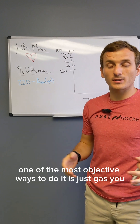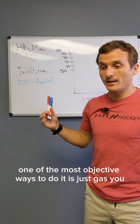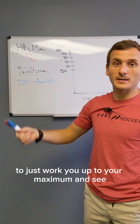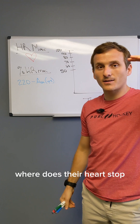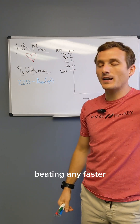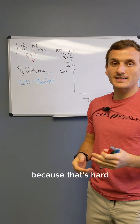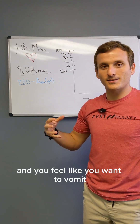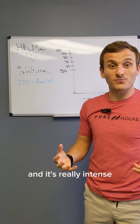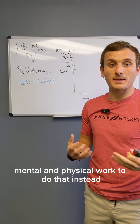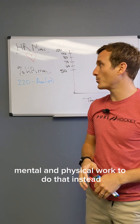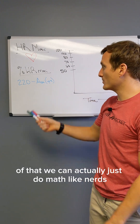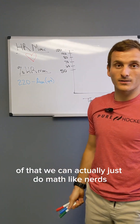There are objective ways to find your heart rate max — the most objective is to just gas yourself, work up to your maximum, and see where your heart stops beating any faster. But that's hard, it feels gross, you want to vomit, and it's really intense mental and physical work. Instead of that, we can just do math like nerds.